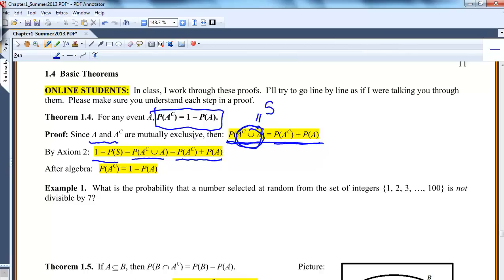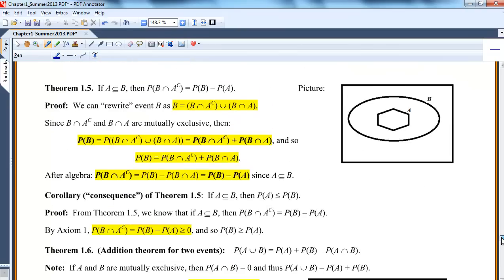So now if I just do a little algebra, if I just move probability of A complement to this side and 1 to this side, or however you want to do it, I'll eventually end up with probability of A complement is 1 minus probability of A. That's a really nice fact to know. Instead of doing example one, I'm going to go down here and do the other theorems.